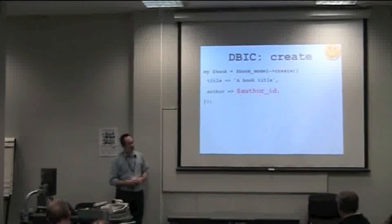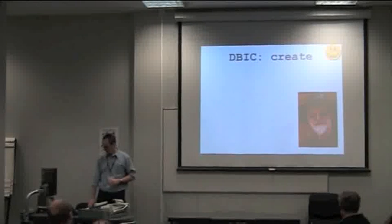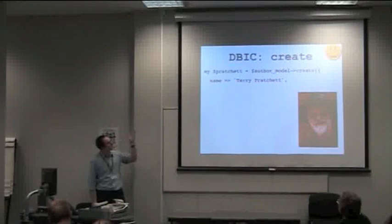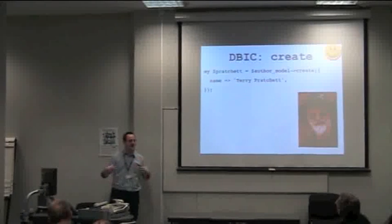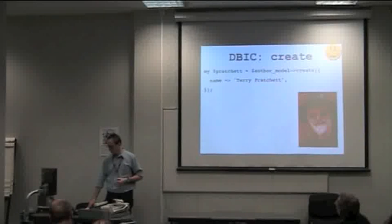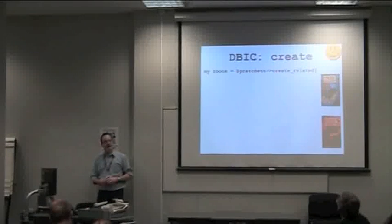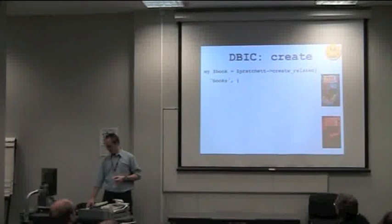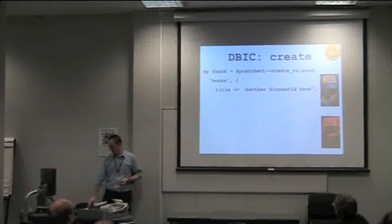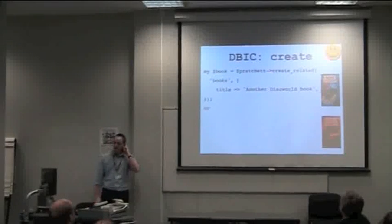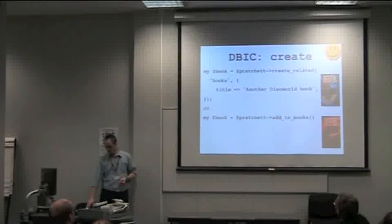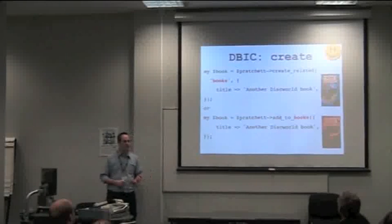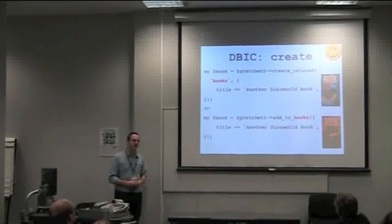So this whole author ID thing, we can look at this from the other way. So let's say we're going to create an author, and then we're going to create a Pratchett author, so we're using our author model, we're going to create a name Terry Pratchett, and that's it, that's inserted into the database, a record, we've now got this Pratchett object. We can then use that to create a related record. So the related record, we want to create its own books table, and we want to create a record with the title of another one, I guess I've got a book. Or in fact, DBIC gives you a method automatically, this add to books. So you can see here, I can either explicitly set which relationship I want to use through to books, or I've got a method there for me automatically to create that record.